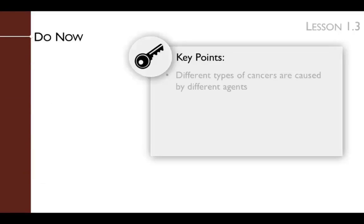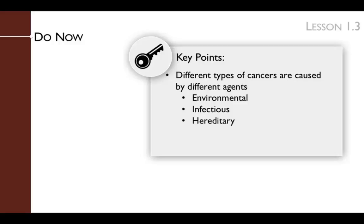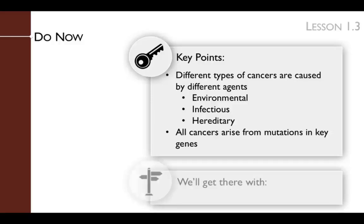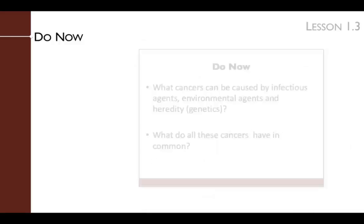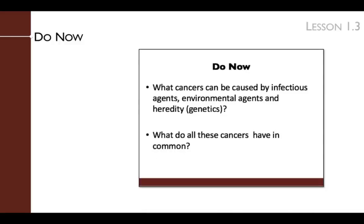The first key point of the Do Now is that different types of cancers can be caused by different agents — these can be environmental, infectious, or hereditary. The second key point is that all cancers arise from mutations in key genes that regulate cell growth. We will get there by discussing the previous lesson's homework, asking students what cancers can be caused by different agents, and having students brainstorm what all cancers have in common, namely that they give rise to uncontrolled growth of cells.